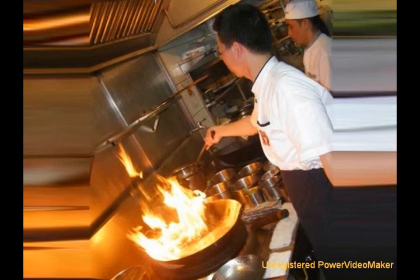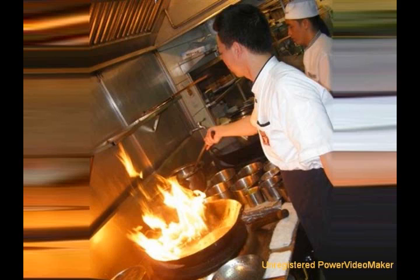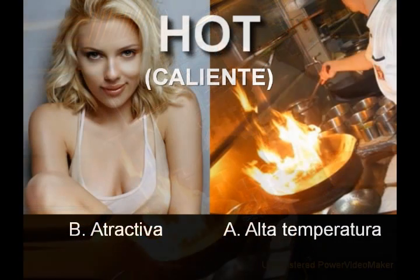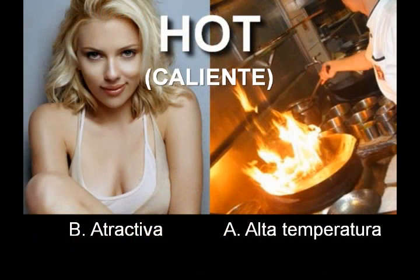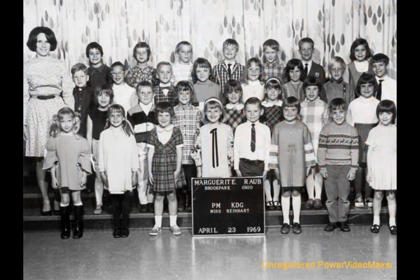Okay, sentence one: That girl is very hot. Now do I mean A, that girl has a very high temperature, or B, that girl is attractive? I'm pretty sure everyone said B for sentence one and A for sentence two. As we all learned as far back as elementary school, words can have multiple meanings, and we must use the context of the sentence to figure out which meaning is most appropriate.